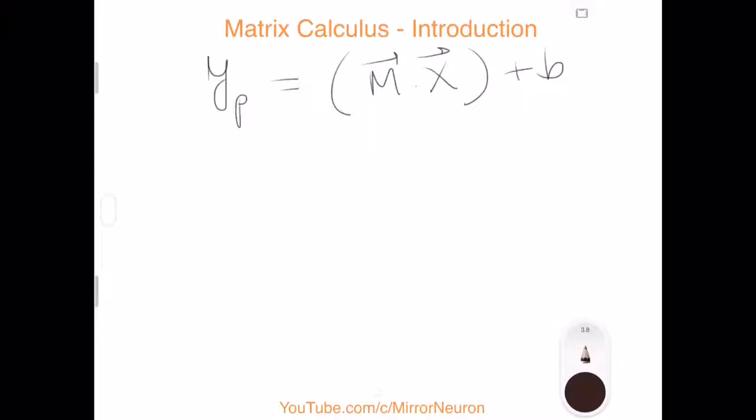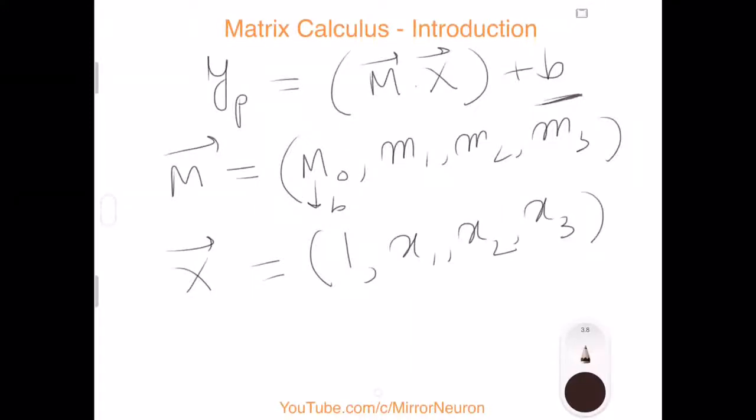In regular practice, we do not keep aside b like this. What we rather do is consider b within our vector representation. Your M vector will have, instead of b, we can write it as m0, and the remaining can be m1, m2, m3. And what we do is our X will have an additional value which is 1, then x1, x2, x3. X is a column vector and M is a row vector.